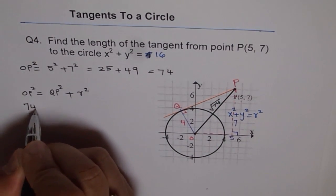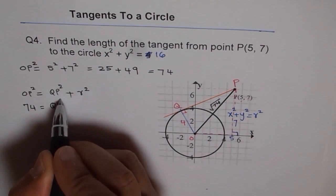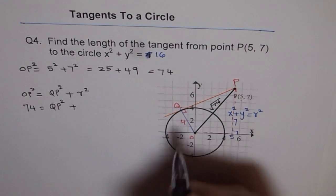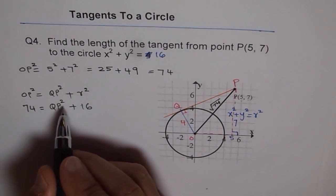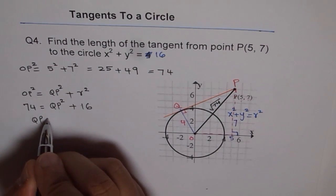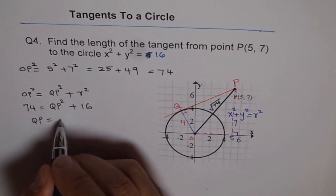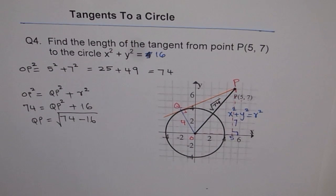So we can solve for QP from here. What is QP equal to? QP equals √(74 - 16). So that is QP.